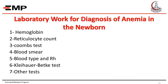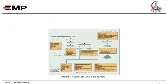Laboratory workup for diagnosis of anemia in the newborn includes hemoglobin level, reticulocyte count, Coombs test, blood smear, blood type and RH, Kleihauer-Betke test, and other tests. After diagnosing anemia by hemoglobin level, check the reticulocyte count. If reticulocyte count is low — 0 to 2% — this indicates bone marrow depression; obtain bone marrow aspiration. Causes may include Diamond-Blackfan syndrome and others.